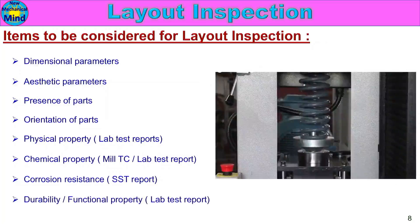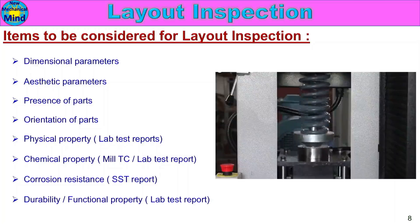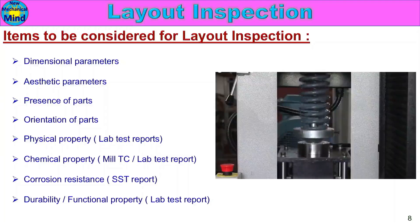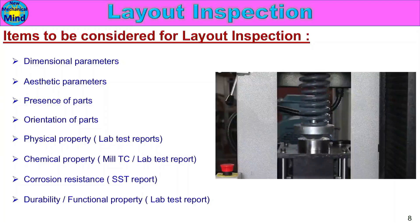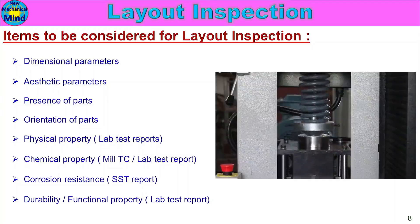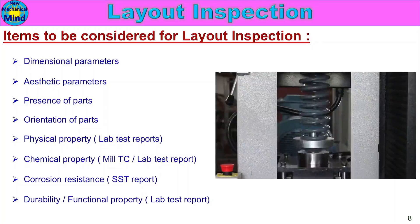Durability lab test reports are also required. Durability is a functional property. For example, a spring rated for 50,000 cycles: first, the spring's free length is measured. Then it is tested for 50,000 cycles, and after testing, the spring values are checked again. If any major changes are observed after 50,000 cycles, we record them. Durability is a functional property to be included in the layout inspection report.